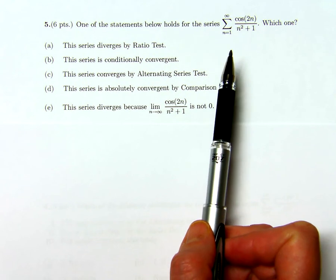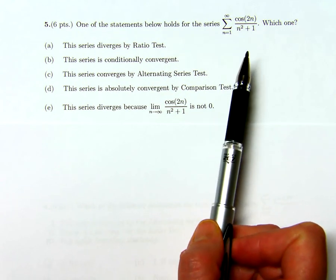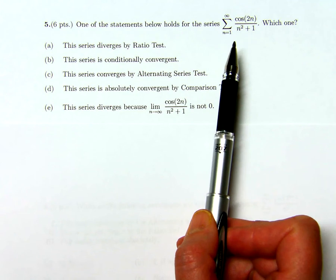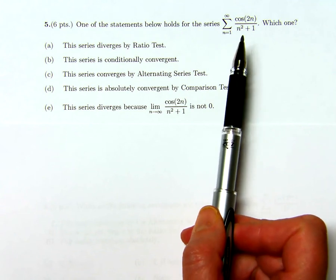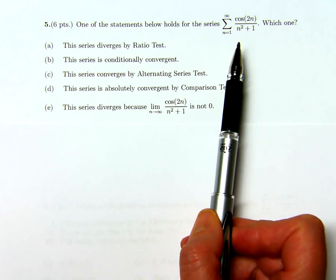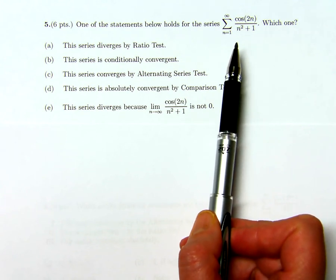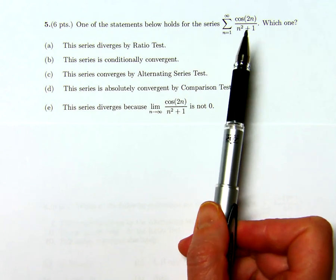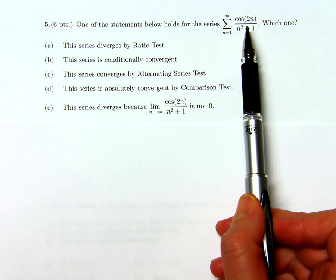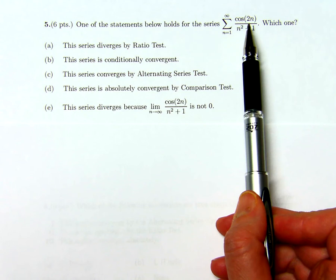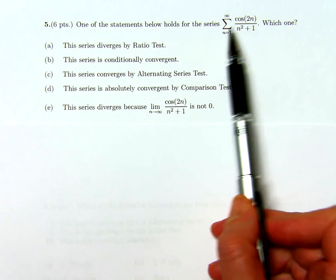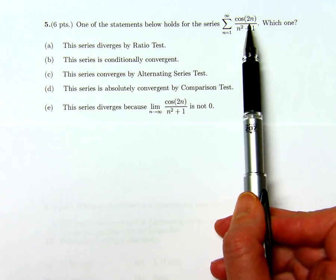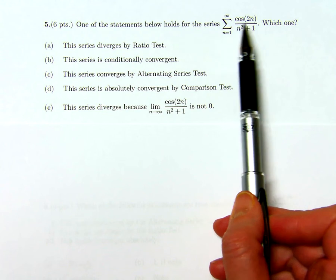I'm going to be a little smarter about this. I'm going to follow my natural instincts, and basically this series upon inspection looks a bit like 1 over n squared plus 1, and the cosine 2n is well-behaved. It's always between minus 1 and 1. We're not exactly sure where it is in that interval, but it's always between minus 1 and 1.